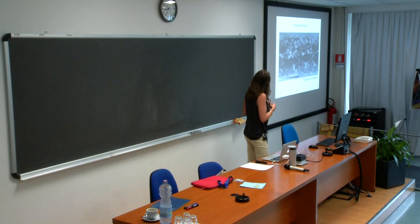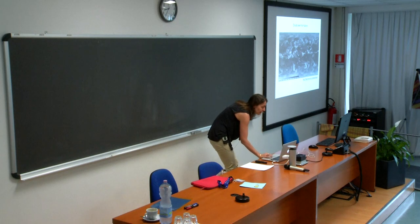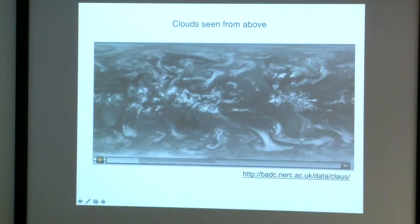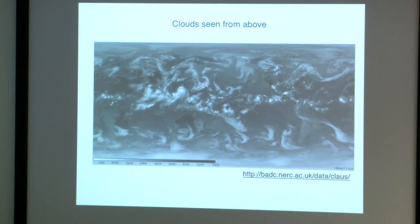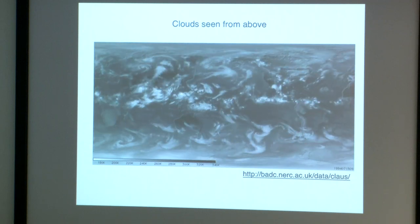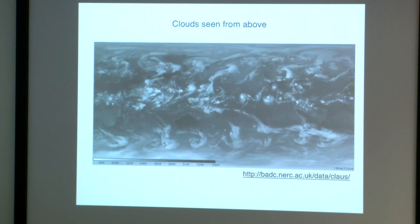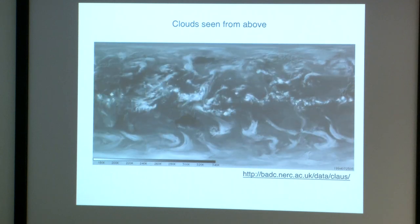One thing that really strikes your attention is the fact that the cloud field is really chaotic and turbulent. This is a reflection of the chaotic and turbulent motions in which clouds are embedded and in which they develop. After staring at this field for a while, despite its turbulent nature involving interactions on many different temporal and spatial scales, some patterns start to emerge. I want to emphasize the key differences between the cloud field in the tropics—broadly defined as the latitude belt 30 degrees north and south of the equator—and the extratropics.